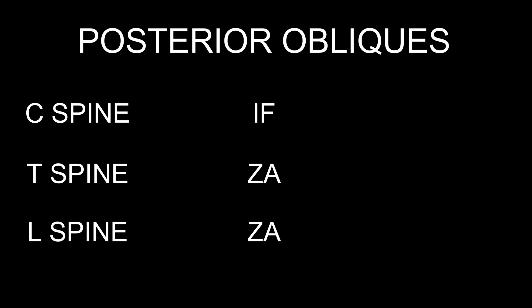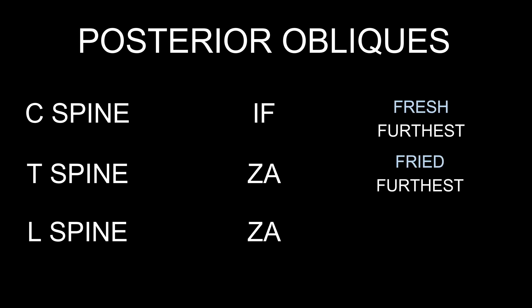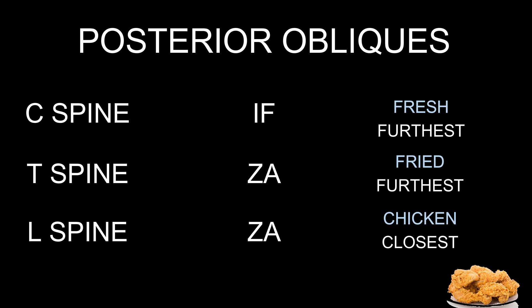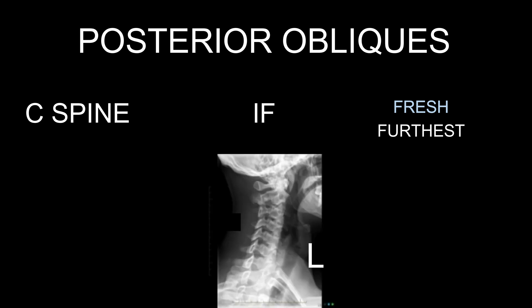The last column — write down 'fresh fried chicken.' Think about imaging a C-spine: your x-ray tube is the furthest, normally around 72 inches, compared to T- and L-spine. The furthest refers to the furthest intervertebral foramina from the IR, which will be the upside intervertebral foramina. When doing an LPO, your left posterior shoulder is against the IR, rotated at 45 degrees. The intervertebral foramina visualized is the one furthest from the IR — that will be the right side, which is the upside.